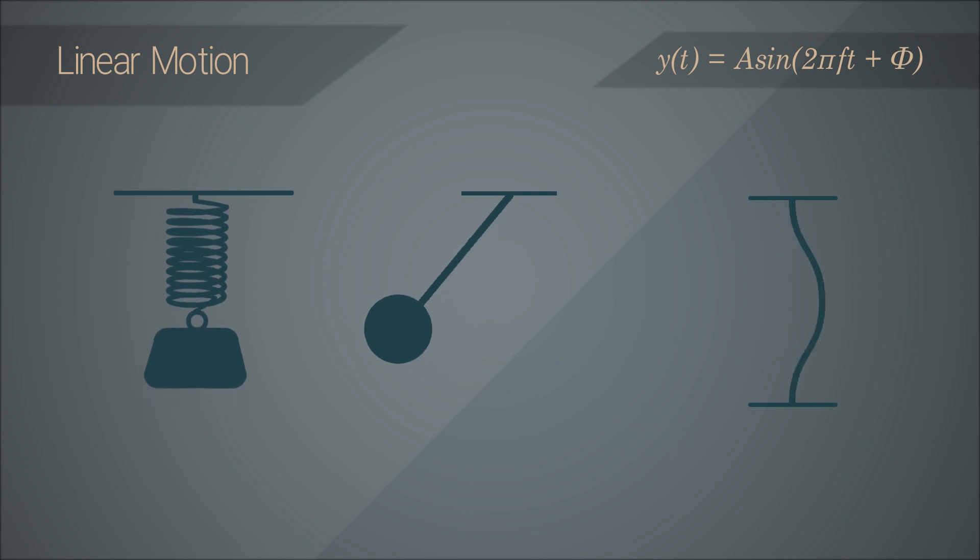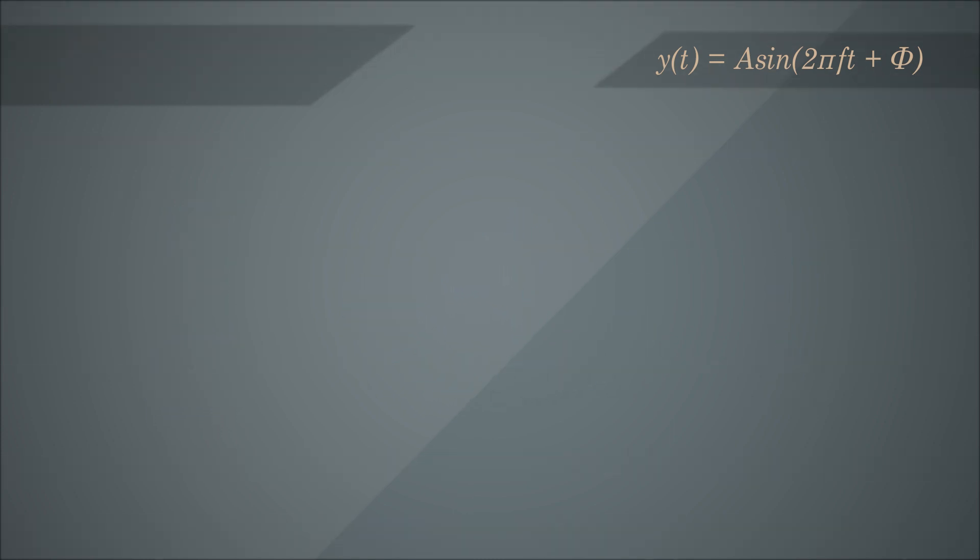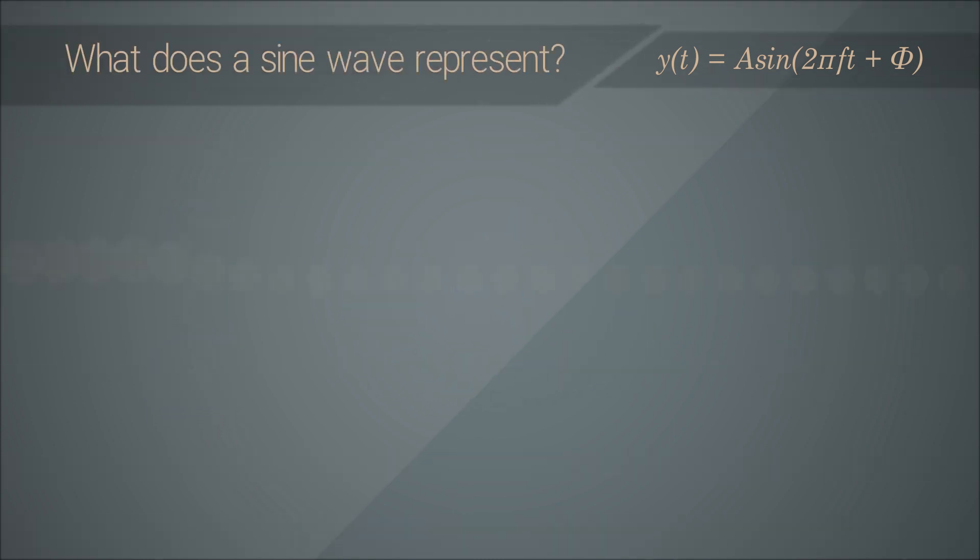The next question, which is quite a profound one, is what does the wave equation actually represent? We know that y(t) = A sin(2πft + φ) describes a simple sine wave, and we know that this periodic wave is what produces a pure tonal sound.